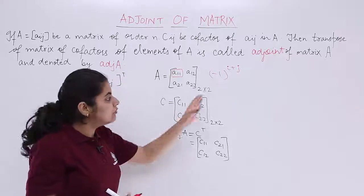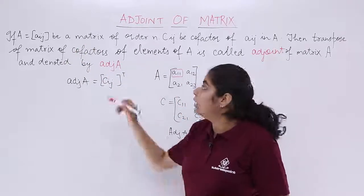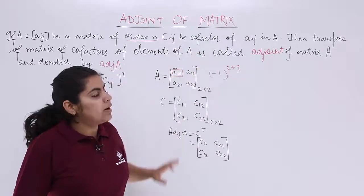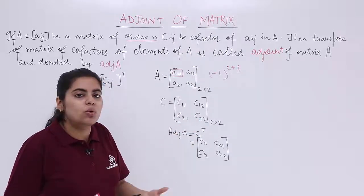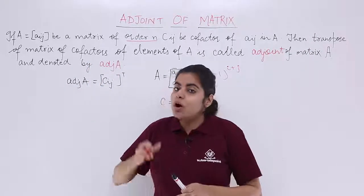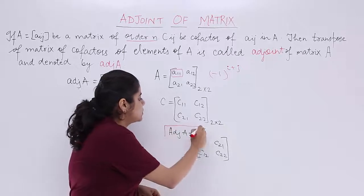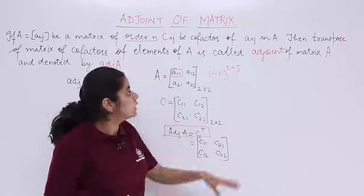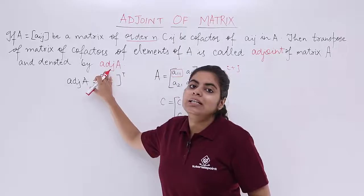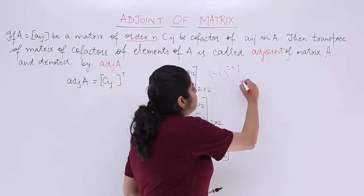Now let me read out the formal definition, and then we will take some numerical examples. If A equals Aij is a matrix of order N — meaning an N by N square matrix — and Cij is the cofactor of Aij, then the transpose of the matrix of cofactors is known as the adjoint. It is denoted as adj of that matrix, such as adj A or adj B.